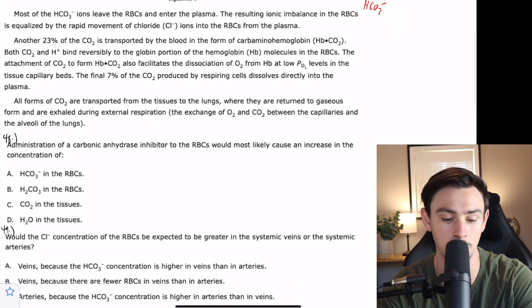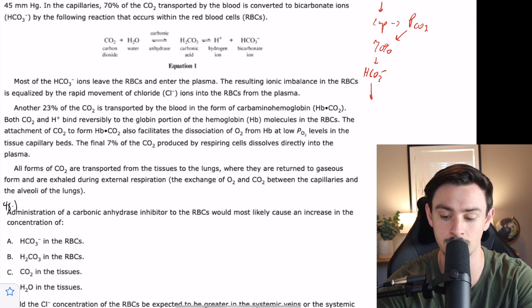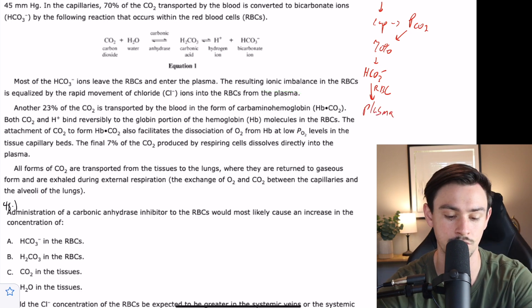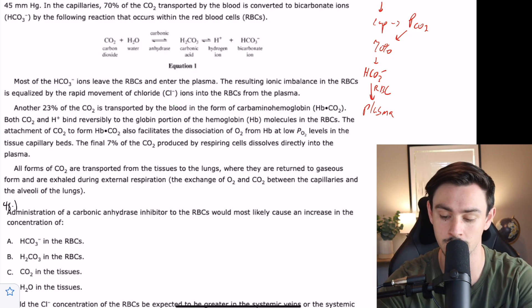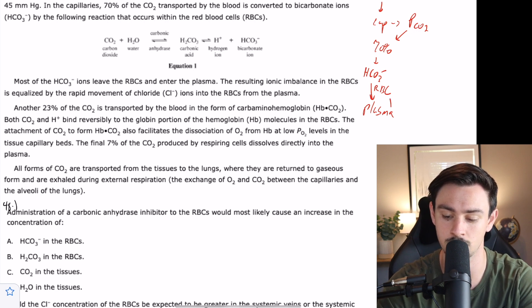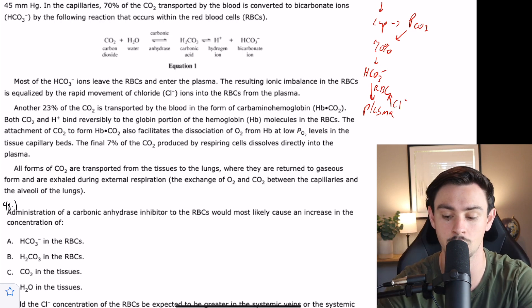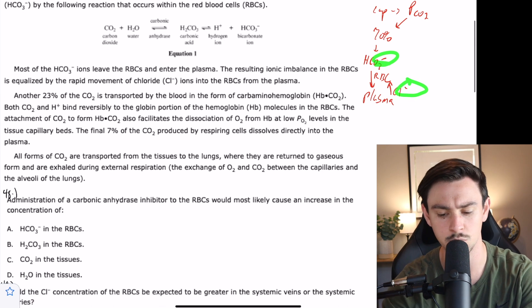Most of the bicarb ions leave the red blood cells and enter the plasma. The resulting ionic imbalance in the red blood cells is equalized by rapid movement of chloride ions into the red blood cells from the plasma. So chloride is going from the plasma to the red blood cells, bicarb is going from the red blood cells to the plasma, and that charge gets equalized out.